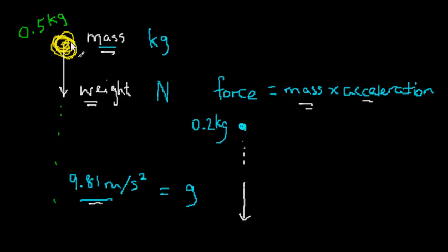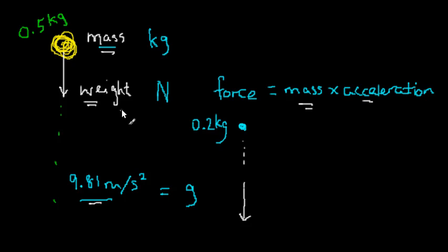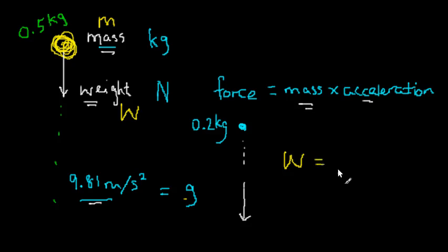To summarize, let me write down an equation. This is a rewrite of Newton's Second Law, thinking of the force as the weight. Using w for weight, m for mass, and g for acceleration due to gravity, Newton's Second Law gives us: w = m × g. This is our weight equation.